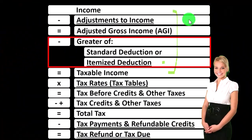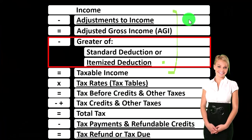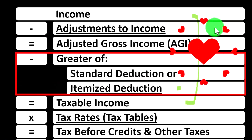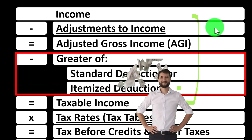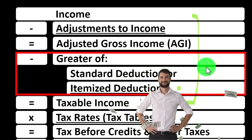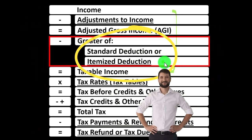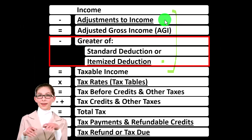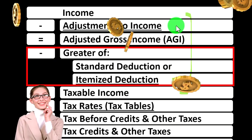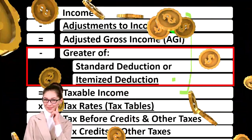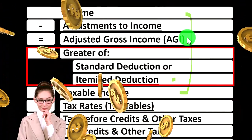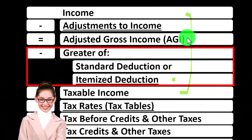Then we have the adjustments to income, which you can think of as deductions — sometimes referred to as above-the-line deductions or Schedule 1 deductions — as opposed to the below-the-line deductions. In our case, the itemized deductions are going to be the Schedule A deductions. You can also think of these top deductions, the adjustments to income, as contra income accounts, because they go to decrease income like a deduction.